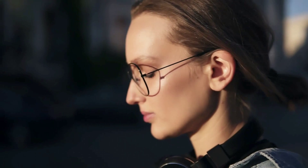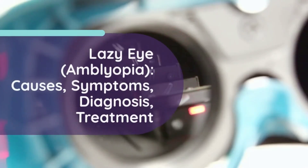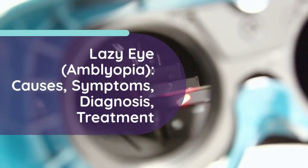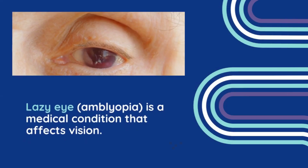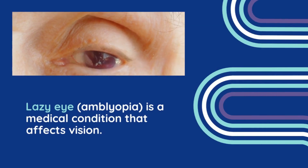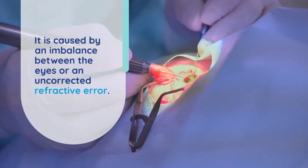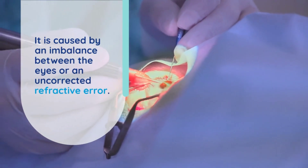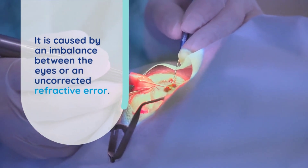Causes: Strabismus (crossed eyes) — when the eyes are misaligned, the brain may ignore signals from one eye, leading to amblyopia. Refractive errors — significant differences in the prescription between the eyes, such as one eye being more nearsighted, farsighted, or having more astigmatism. Cataracts — clouding of the eye's lens can obstruct vision development. Ptosis (drooping eyelid) — a drooping eyelid may block vision in one eye.